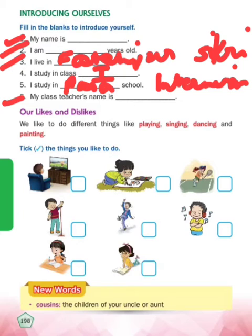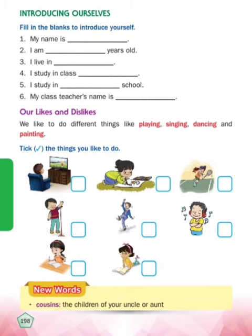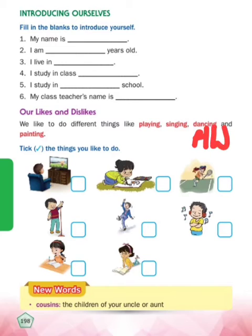Next exercise: Our Likes and Dislikes. Likes means which things we feel good about; dislikes means which we don't like to do. We like to do different things like playing, singing, dancing, and painting. This is again your homework - aapko tick karna hai jo chizhe aapko is mein se pasand hai. This boy is watching TV - kisi ko watching TV dekhna bohat pasand hota hai.